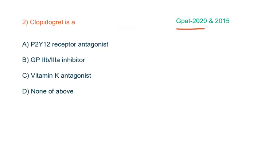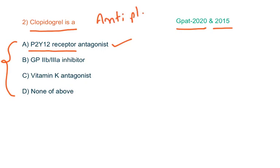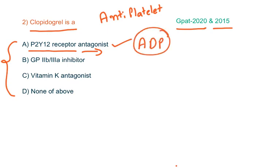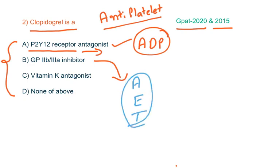This question is given in both GPAT 2020 and 2015. The 2015 question is: clopidogrel is — and all the choices are mechanisms of action. The answer is P2Y12 receptor antagonist. Clopidogrel is an anti-platelet agent that acts by blocking the P2Y12 receptor, hence it is a P2Y12 receptor antagonist. These receptors are selective for ADP, and when they are blocked, platelet inhibition occurs. The GP2b3a inhibitor is also an anti-platelet class, with examples like abciximab, eptifibatide, and tirofiban. Vitamin K antagonists are coumarin derivatives like warfarin, which act as anticoagulants. So the answer is P2Y12 receptor antagonist.